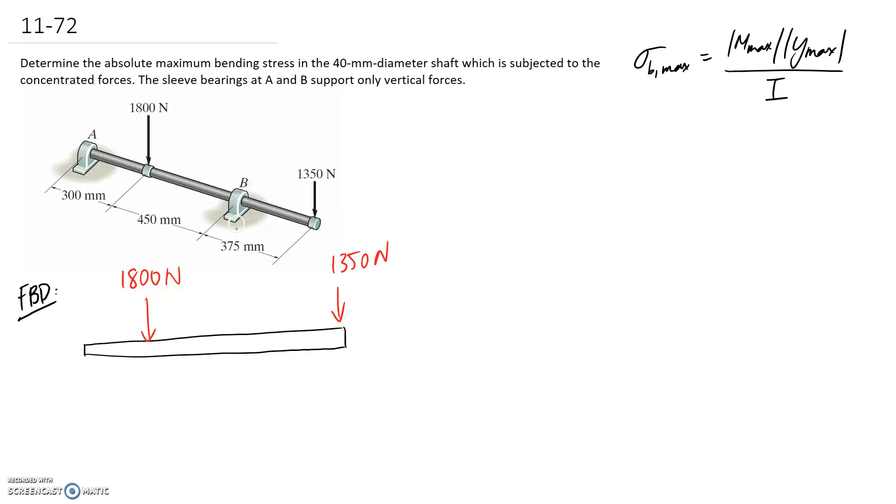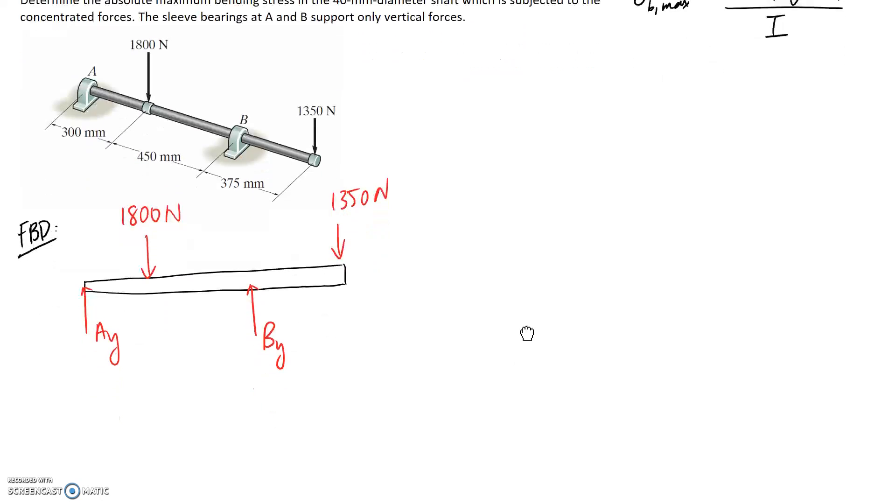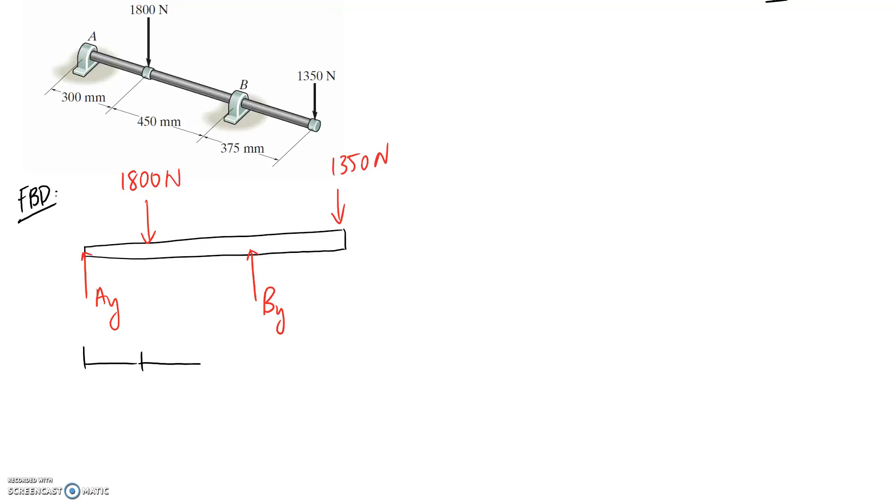We're told that A and B, these bearings, are only able to support vertical reactions or vertical forces. So that means there's only going to be a vertical reaction for them. There's going to be no horizontal component. So essentially they're like a roller joint, where the shaft would be able to slide back and forth along this direction, but it's restricted in moving up and down. Let me just put the dimensions on this diagram as well. I'm going to convert them into meters so that when we look at moments, we'll be using the meter unit for that as well.